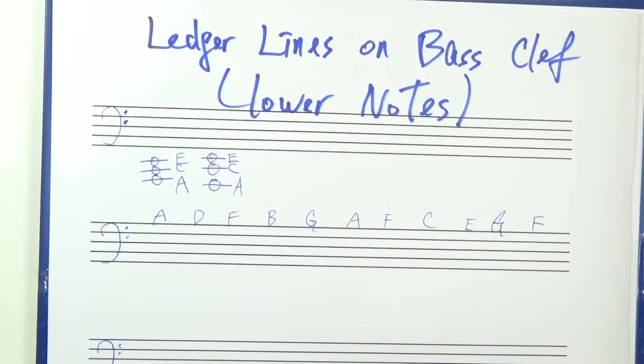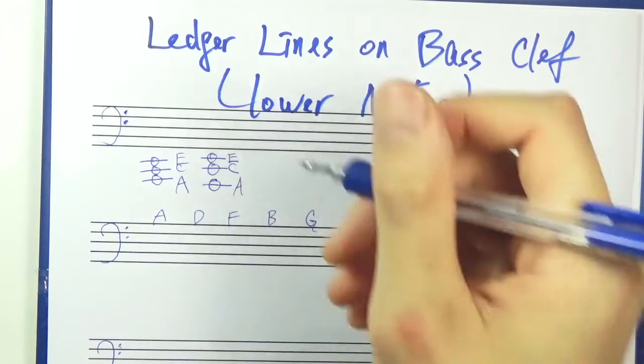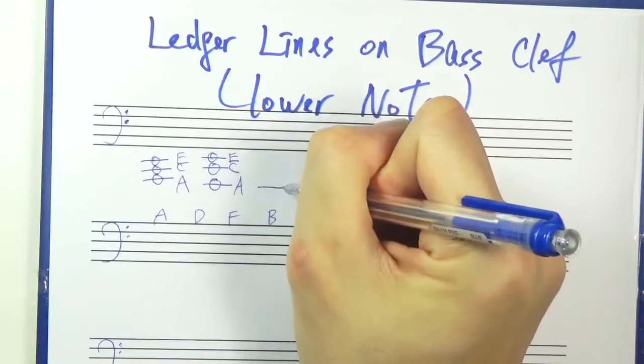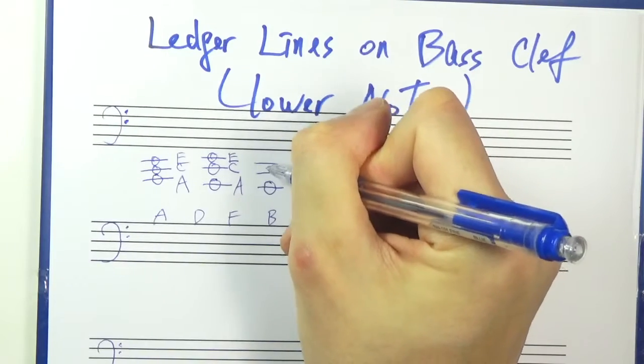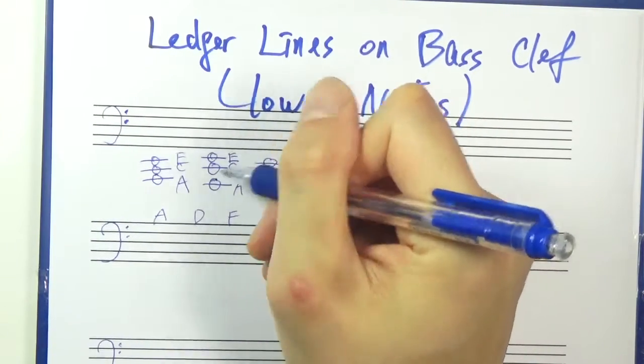Again, if we want to go way below a clef, in this case a bass clef, we can add ledger lines. So just extra lines on the bass clef. The way I go about memorizing these notes is, I'll write out three lines. And they form a nice A minor triad. A, C, E, A, C, E.